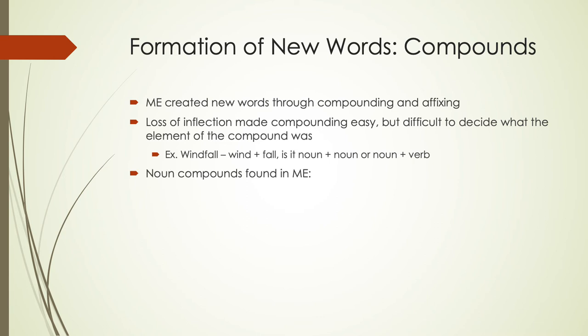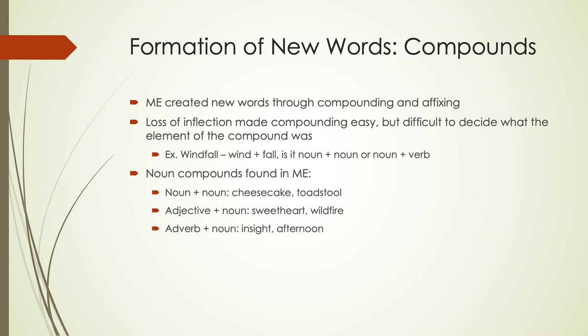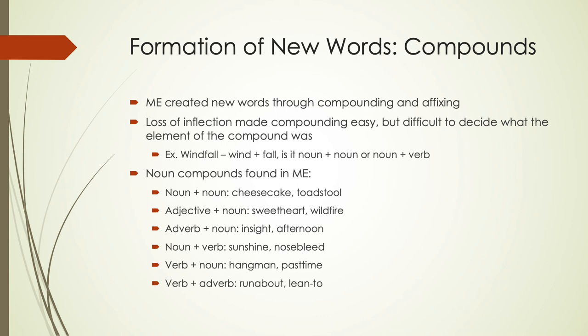Compounds starting in Middle English include noun-noun compounds like 'cheesecake' and 'toadstool'; adjective-noun compounds like 'sweetheart' and 'wildfire'; adverb-noun compounds like 'insight' and 'afternoon'; noun-verb compounds like 'sunshine' and 'nosebleed'; verb-noun compounds like 'hangman' and 'pastime'; verb-adverb compounds like 'runabout' and 'lean-to'; and adverb-verb compounds like 'outcome' and 'outcast.' These are all things we're able to compound in Middle English that we don't really see previously in the Old English time period.